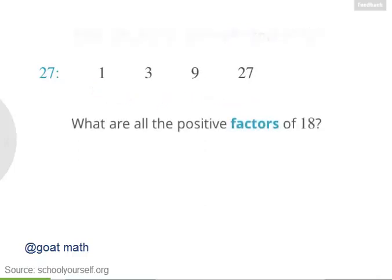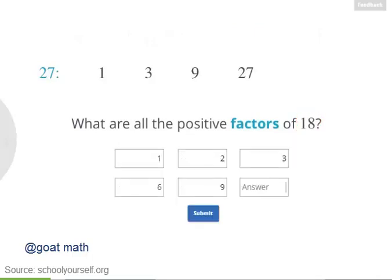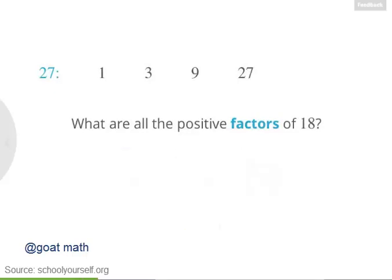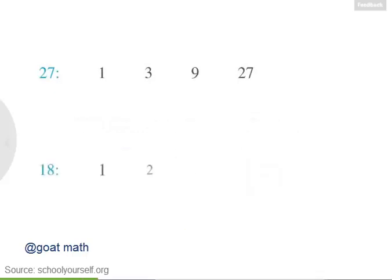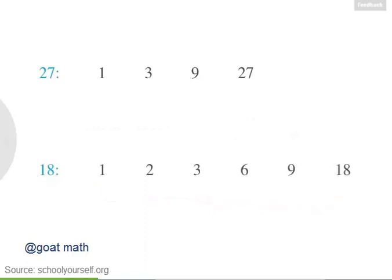Next, what are all the factors of 18? Again, nicely done. The factors of 18 are 1, 2, 3, 6, 9, and 18.